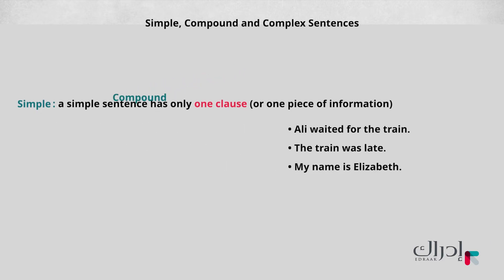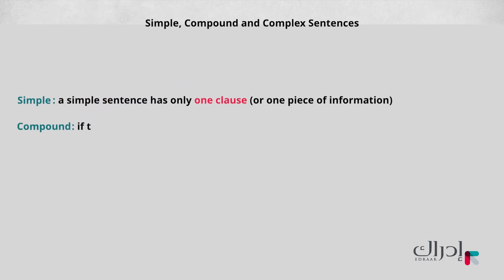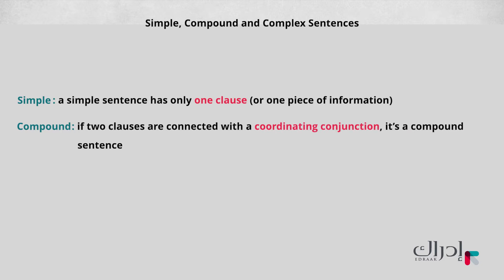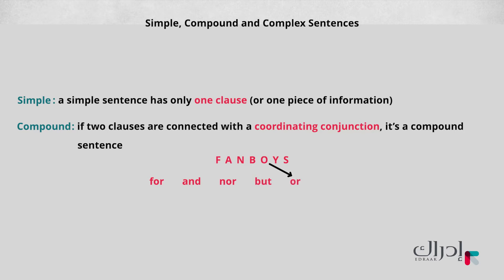The second type is compound. If two clauses are connected with a coordinating conjunction, it's a compound sentence. Just remember the acronym FANBOYS: F stands for 'for', A stands for 'and', N stands for 'nor', B stands for 'but', O stands for 'or', Y stands for 'yet', and S stands for 'so'. These are all coordinating conjunctions.